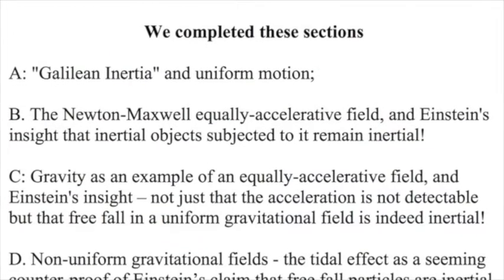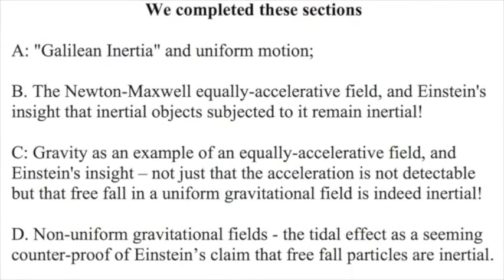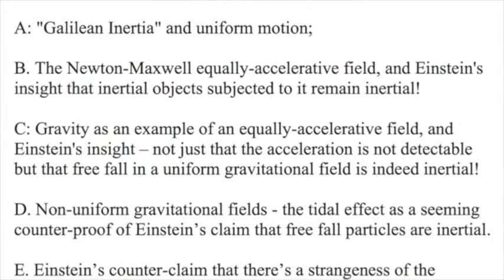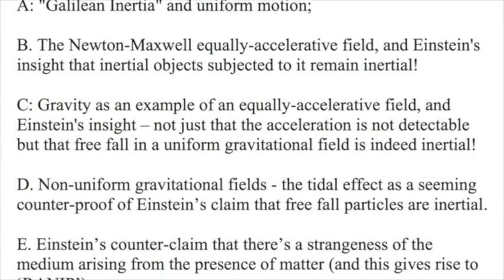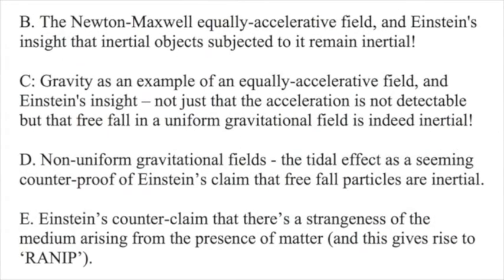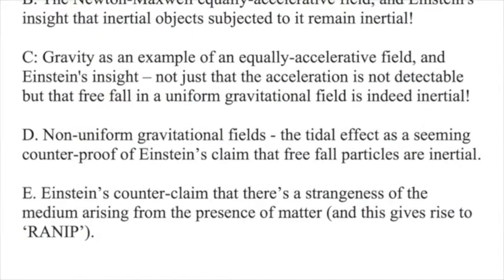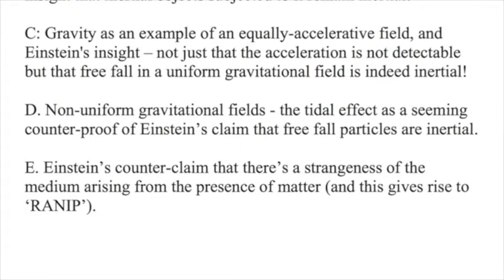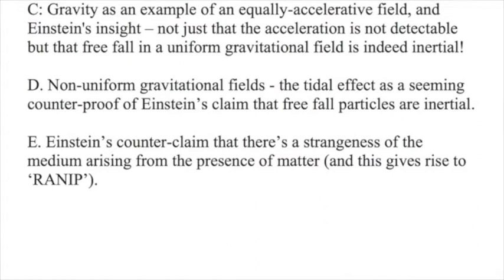In the first lecture, we completed five sections. A: Galilean inertia and uniform motion. B: The Newton-Maxwell equally accelerated field and Einstein's insight that inertial objects subjected to it remain inertial. C: Gravity is an example of an equally accelerated field and Einstein's insight — not just that the acceleration is not detectable, but that freefall in a uniform gravitational field is indeed inertial. And D: Non-uniform gravitational field.